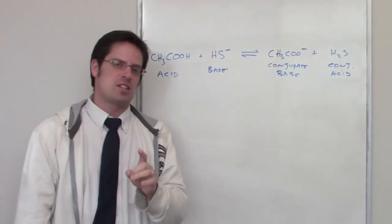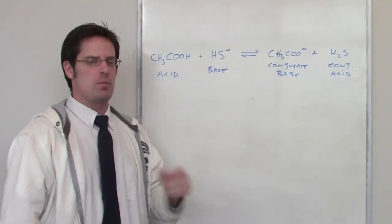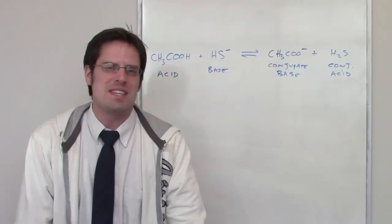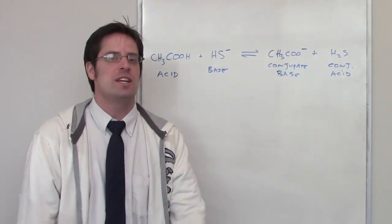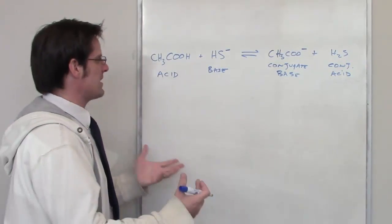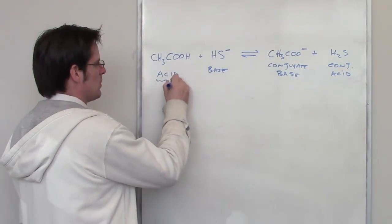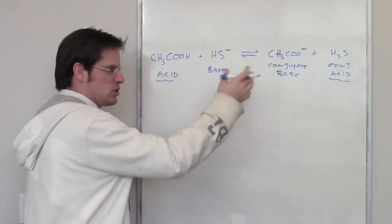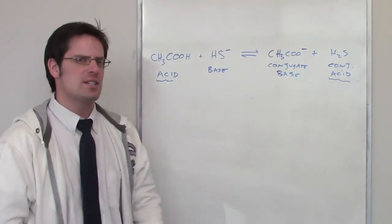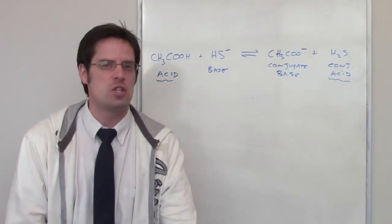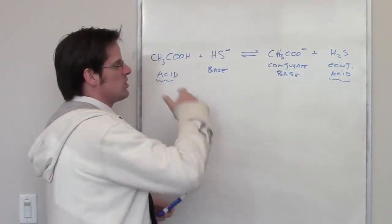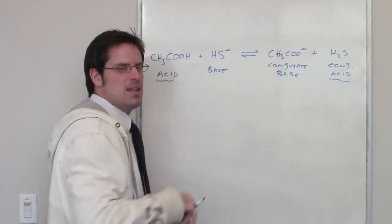The next part of this problem asks us to determine which side of the equilibrium will be favored. Remember, the equilibrium side that's favored is always going to be the side that has the weakest acid. So what acids do I have? Well, I've got this one right here, acetic acid, and I've got this one over here, H2S. Which of those two acids is going to be the weaker of the two acids? Whichever one is the weaker acid, that means it's the stabler acid, so that side is going to be favored.